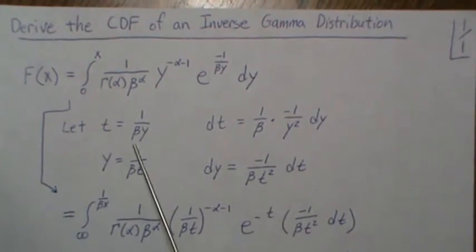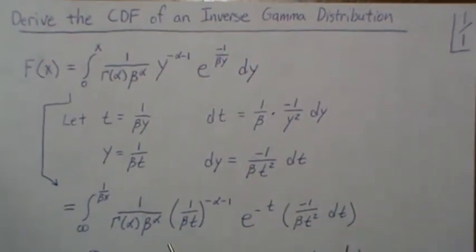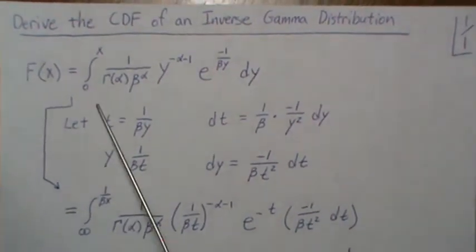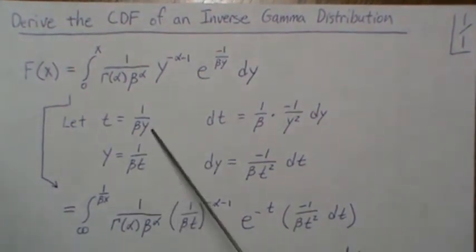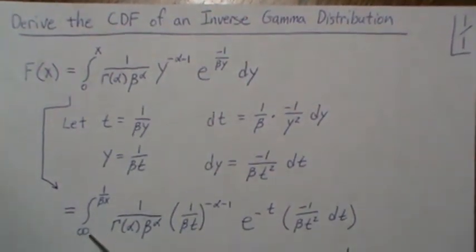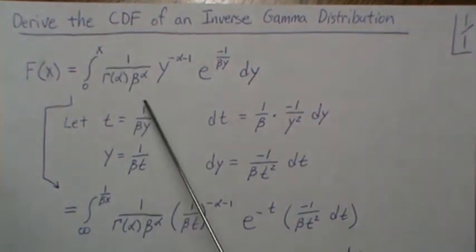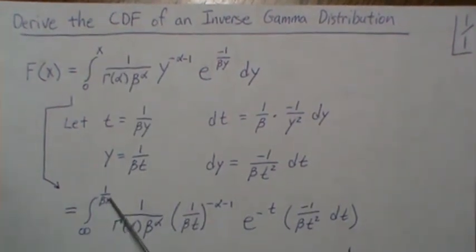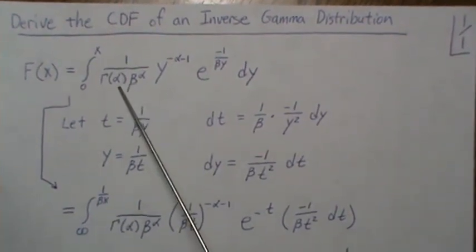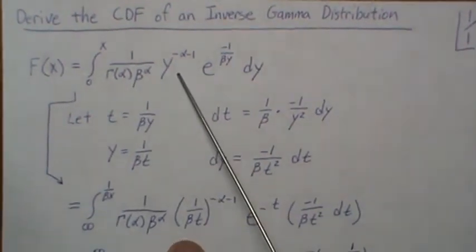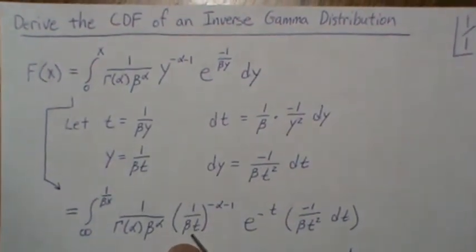So now substituting this back in here, first we let 0 go in here, and that means this kind of blows up to infinity. And then X you plug in there, you just get 1 over beta X. Gamma comes down, beta comes down, the Y plug in this, and we get here.